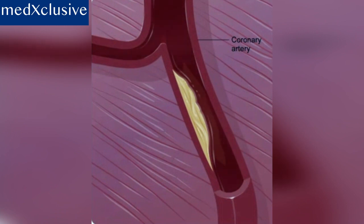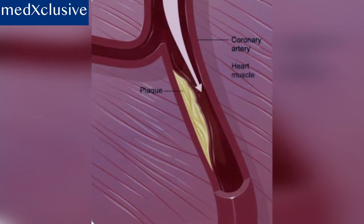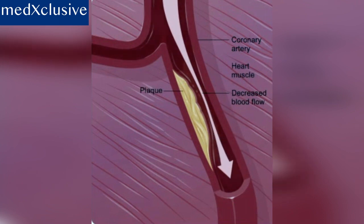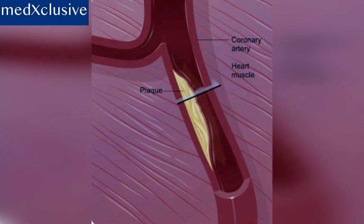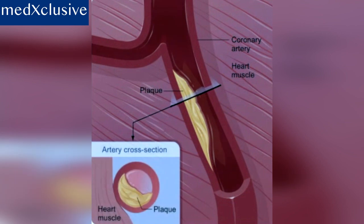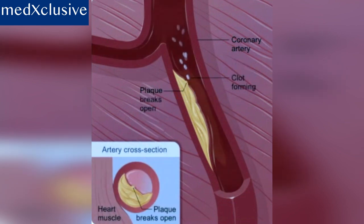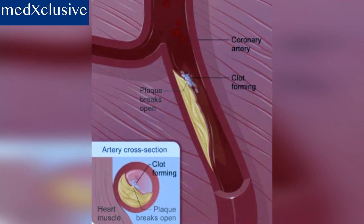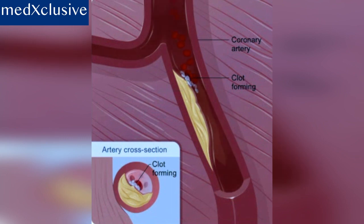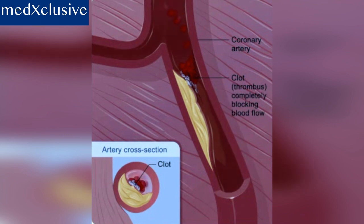In coronary artery disease, the inside of the coronary arteries narrow and harden because of the buildup of fatty material called plaque. Blood flow to the heart muscle is decreased. If the plaque cracks or breaks open, a blood clot can form on the surface of the plaque. The clot, also called a thrombus, can completely block blood flow in the artery.